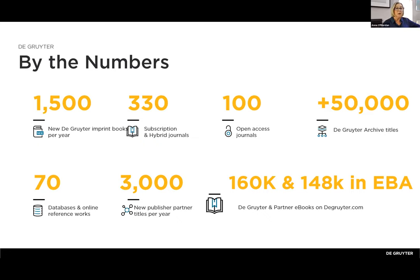In addition to our own content, we host e-books on behalf of 30 or so publisher partners, including 20 American University Presses. Within that program, we offer about 3,000 front-list publisher partner titles each year on the platform. The total number of e-books on the platform is currently 160,000, of which about 147,000 to 148,000 are in our EBA collections.